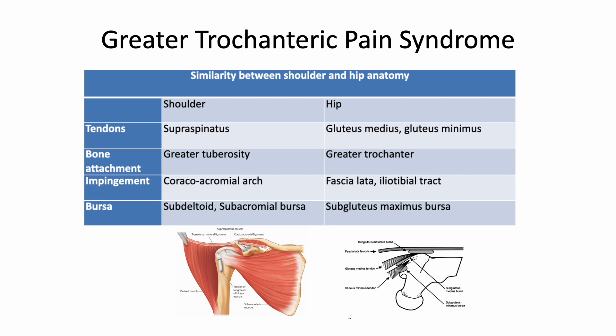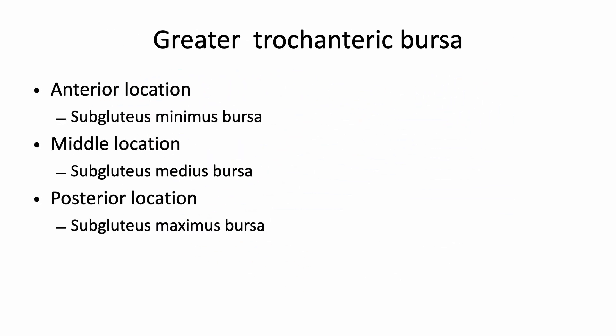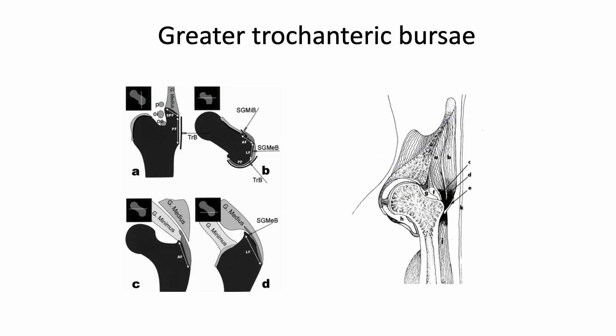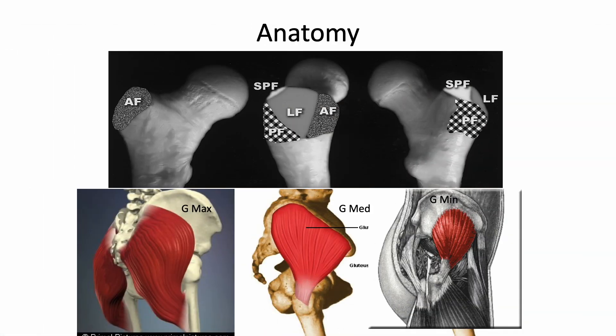There are strong similarities between the shoulder and hip anatomy. There are three different bursae around the greater trochanter, and their location can differentiate them. The subgluteus maximus bursa is the largest one in the greater trochanteric region. The greater trochanter is the facet providing muscle attachment for gluteus medius and minimus.